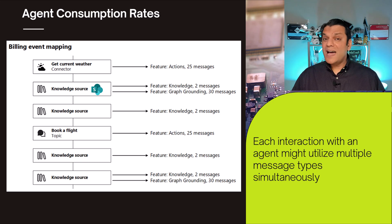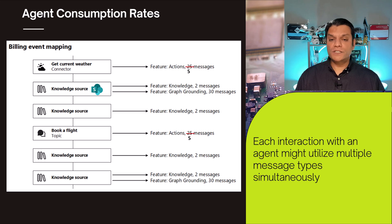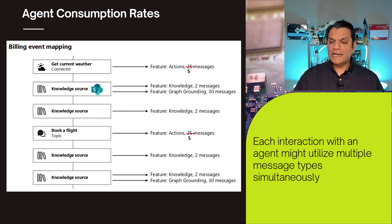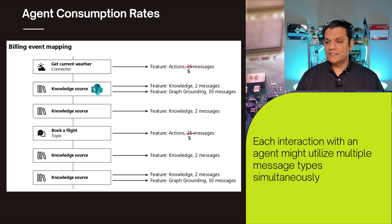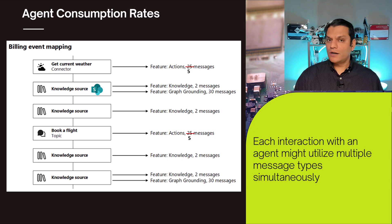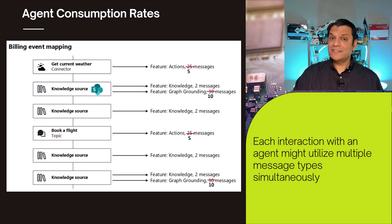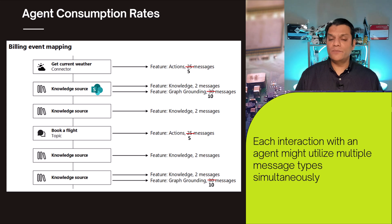Now with the new consumption rates, here is what changes. Everything related to get weather and book a flight just dropped from 25 to only 5 messages. And for retrieving knowledge from your knowledge source, that 30 messages just got sliced down to only 10 messages. The overall consumption was pretty high before, but now it is dramatically lower.